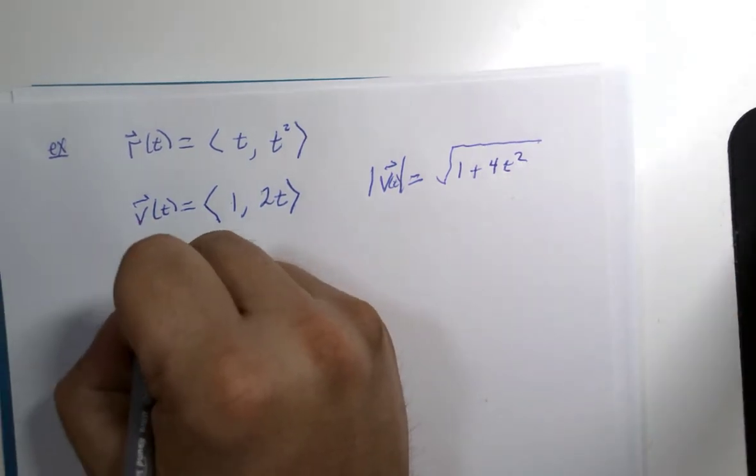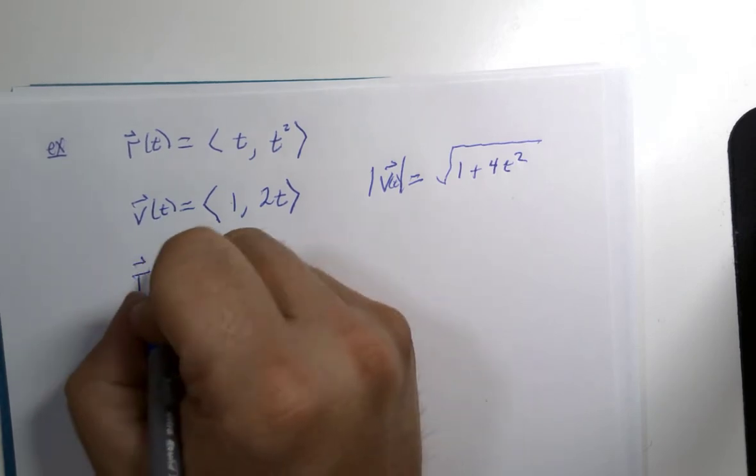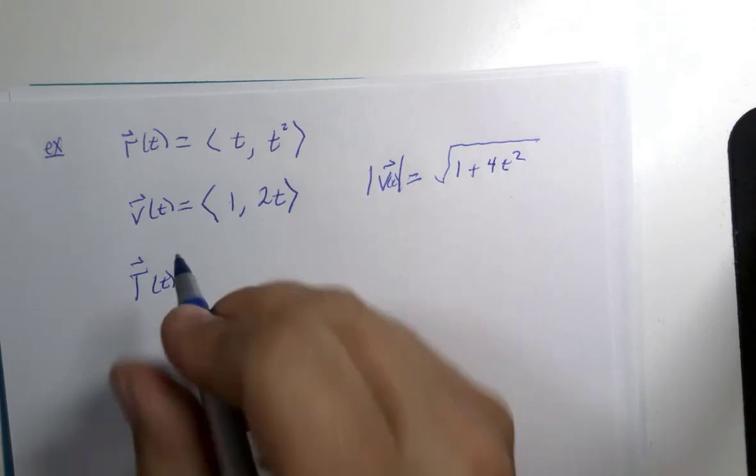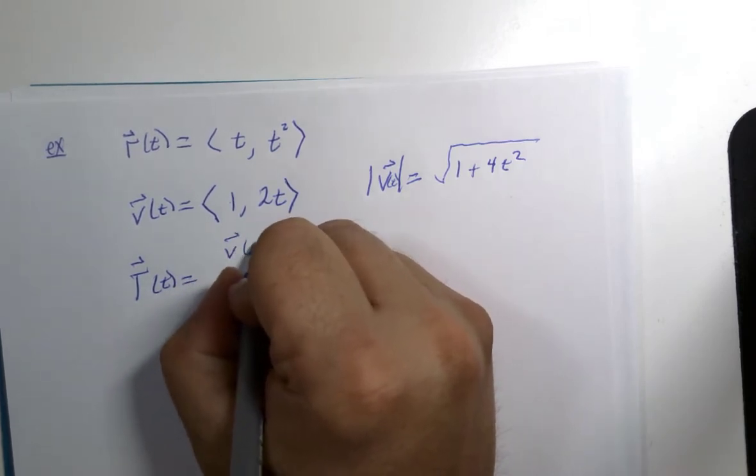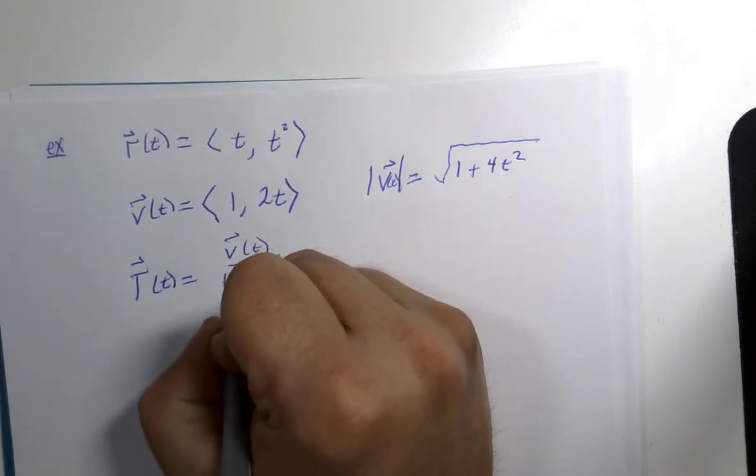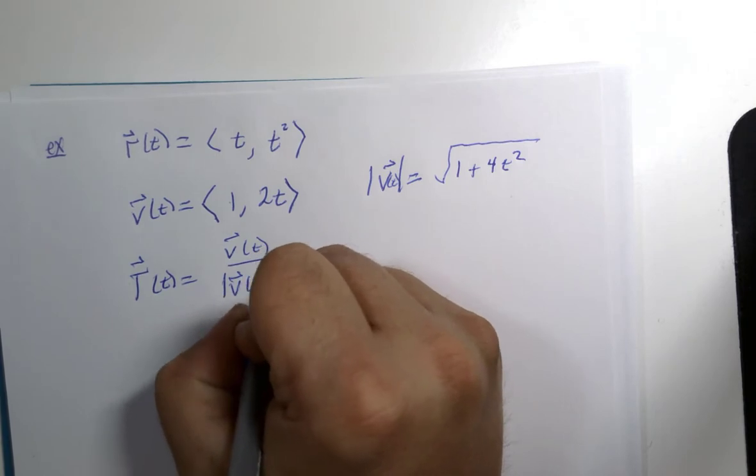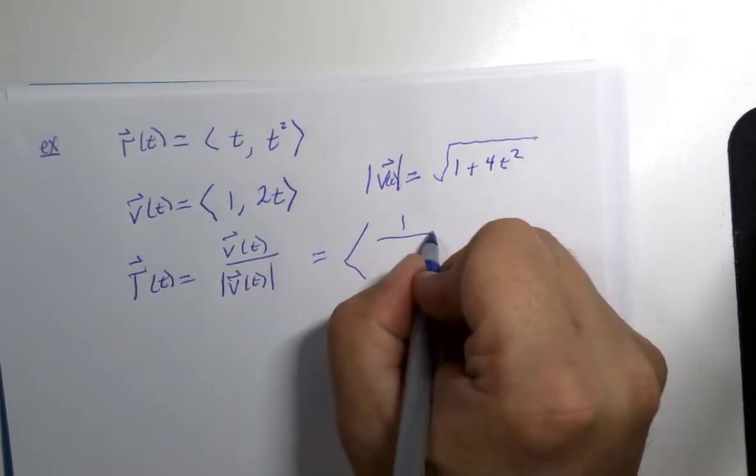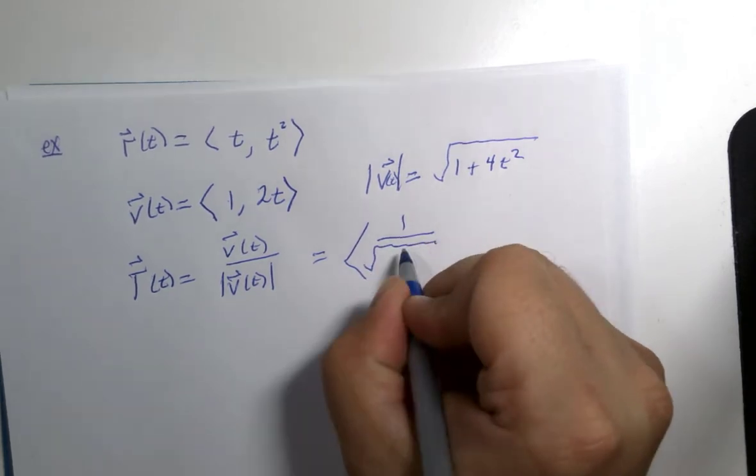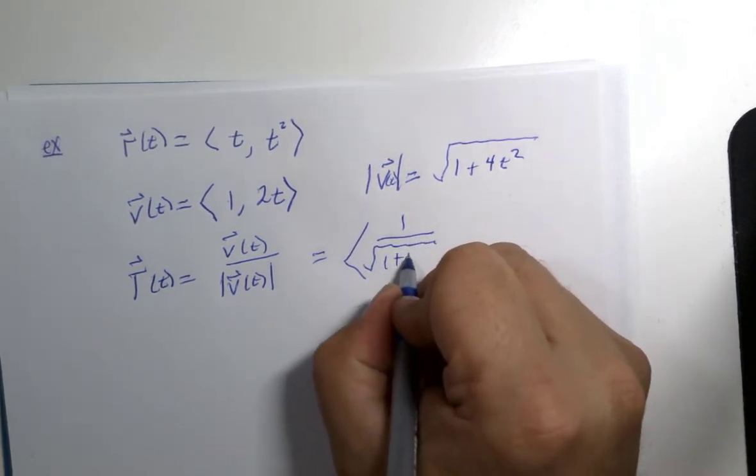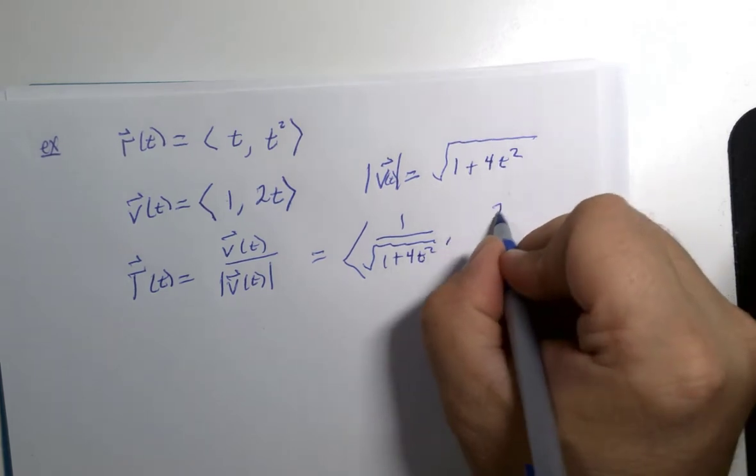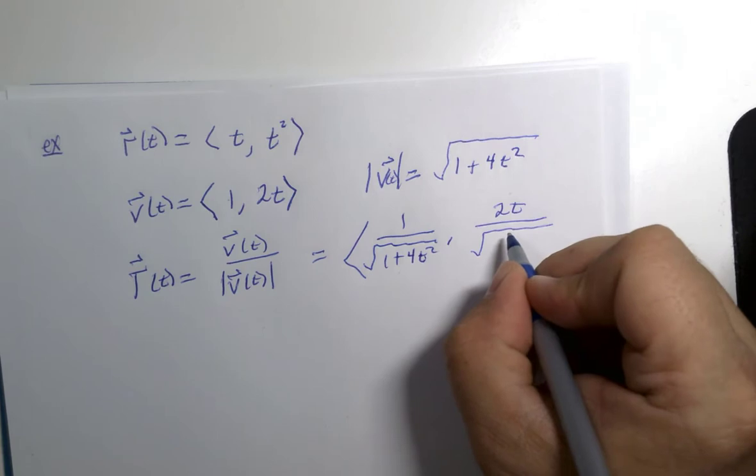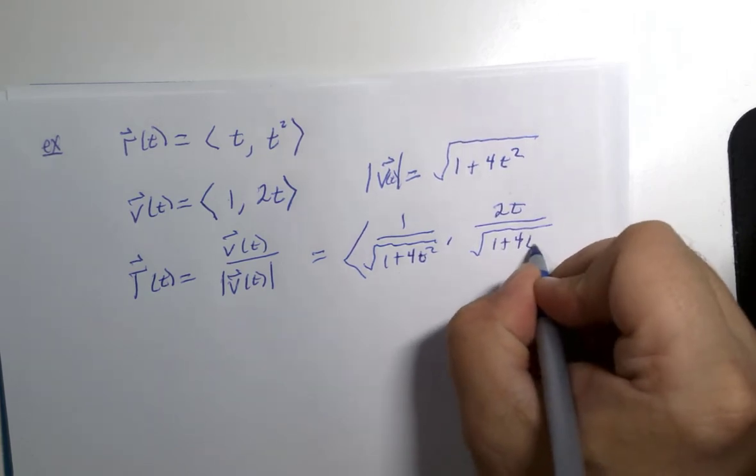So the unit tangent vector would be the velocity vector divided by its magnitude, and that will be 1 divided by square root 1 plus 4t squared, and 2t divided by square root 1 plus 4t squared.